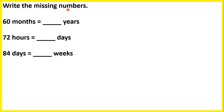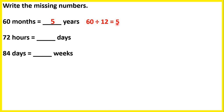Write the missing numbers. 60 months is the same as how many years? Remember there are 12 months in one year, so to find the number of years we can divide 60 by 12. And 60 divided by 12 is 5, so 60 months is the same as 5 years. That makes sense because 5 times 12 gives us 60.